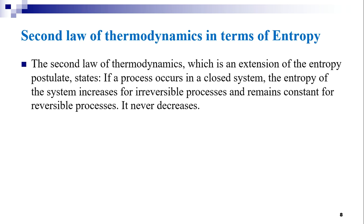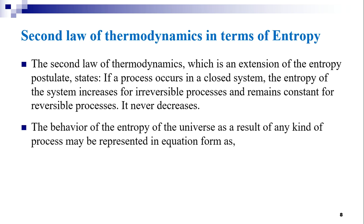The second law of thermodynamics, as an extension of the entropy principle, states that if a process occurs in a closed system, the entropy of the system increases for an irreversible process and remains constant for a reversible process, but it never decreases. The behavior of the entropy of the universe as a result of any process may be represented as delta S ≥ 0, where the equality sign refers to a reversible process and the inequality sign refers to an irreversible process. Hence this equation is a succinct statement of the second law of thermodynamics.